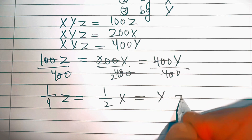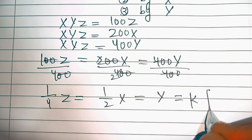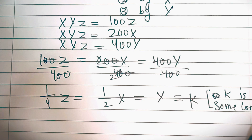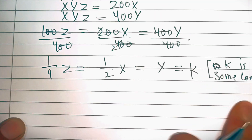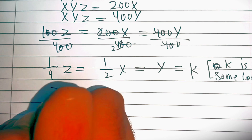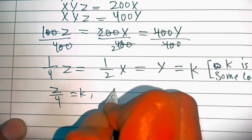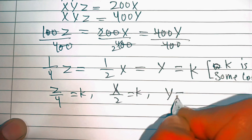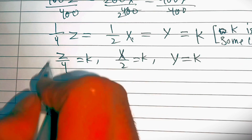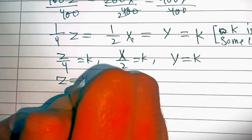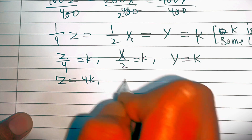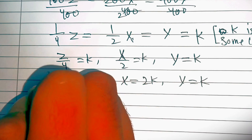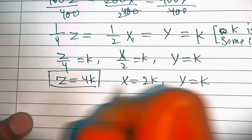Let's make this equal to k, where k is some constant. That means z over 4 equals k, x over 2 equals k, and y equals k. So that gives us z equal to 4k, x equal to 2k, and y equal to k. So we've got the values of x, y, and z.